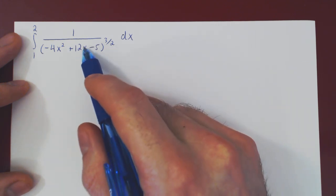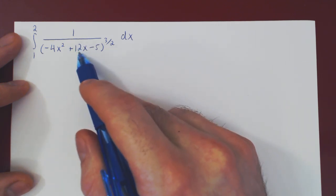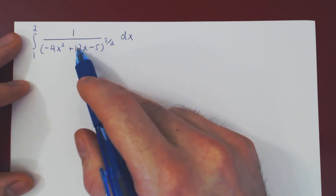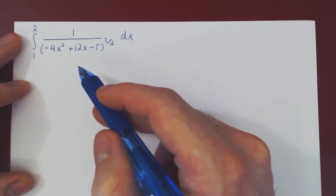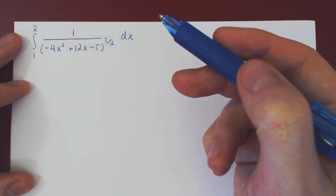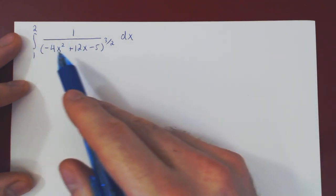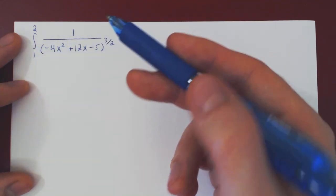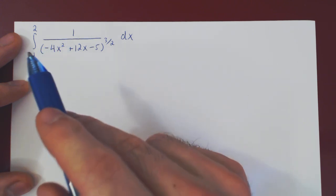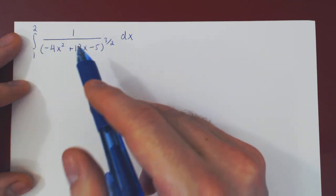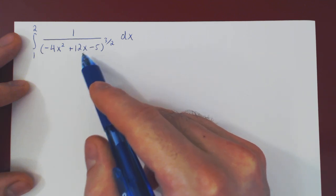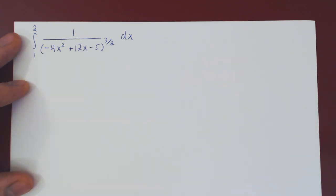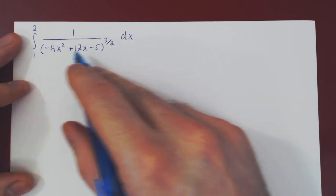So the question is: how can we eliminate this linear factor, this multiple of x? And the answer is, of course, using completion of the squares. Every time you have a definite or indefinite integral that will require a trigonometric substitution and there is the presence of a linear term, before you can make your trigonometric substitution, you have to complete the squares.